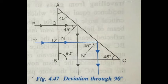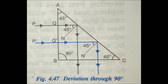The angle of incidence on face AC is 45 degrees. Since the critical angle for the glass-air pair is 42 degrees, this angle of incidence being greater than 42 degrees means the ray of light suffers total internal reflection inside the prism.